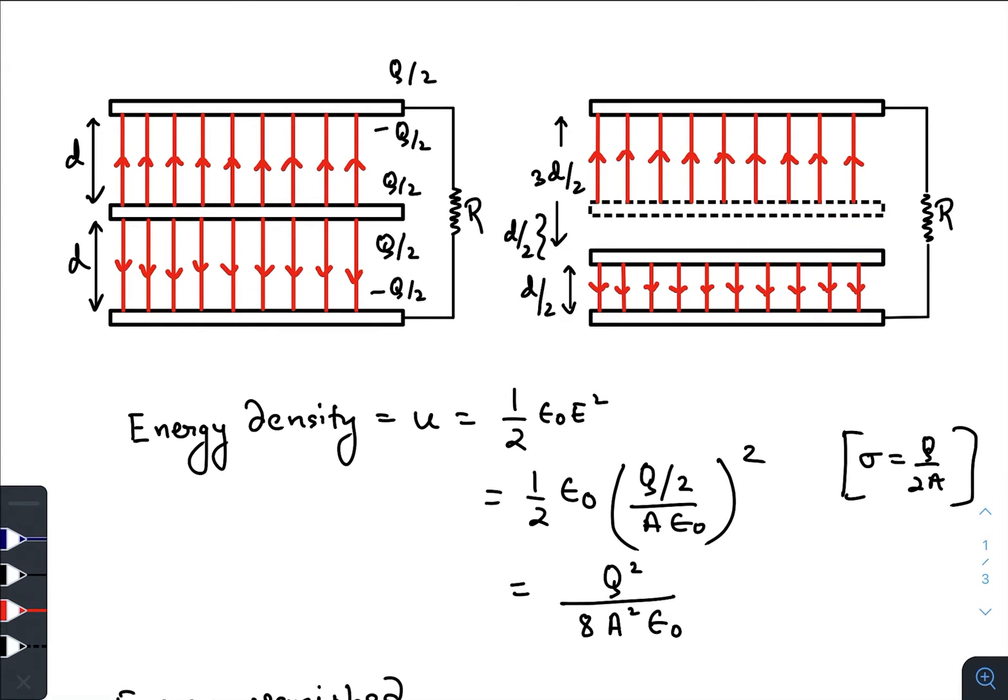A quick shift of this plate causes vanishing of the electric field that were present in this region. Now this whole region, as there was electric field, there was some energy associated with those fields, but now that field is not there. The energy totally gets dissipated across these resistances.